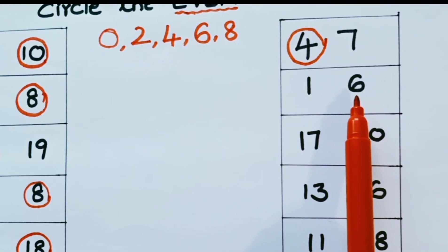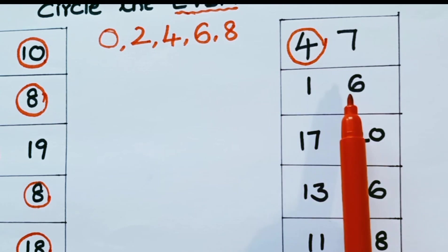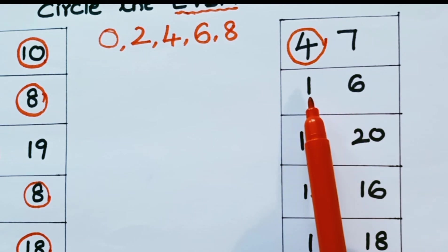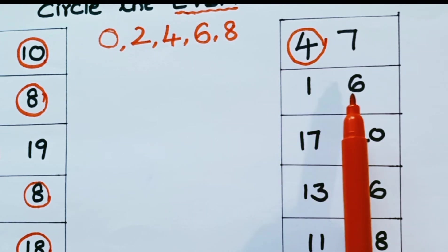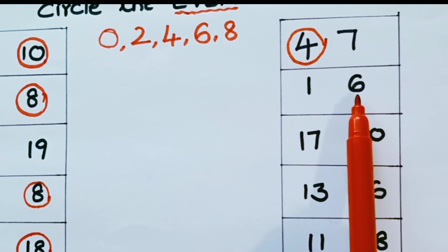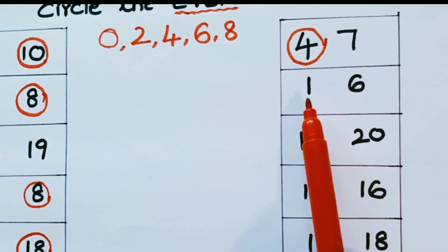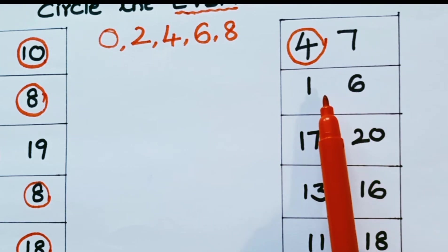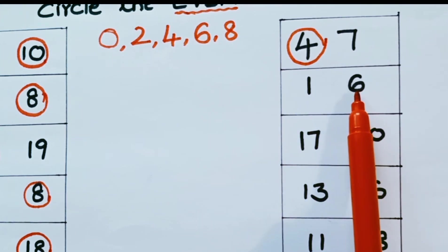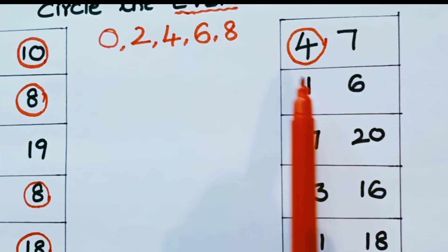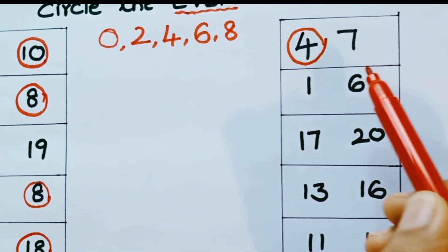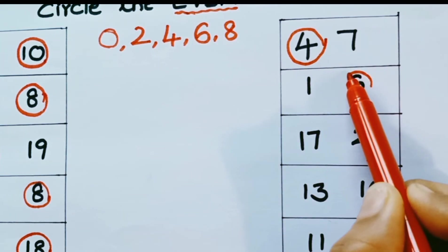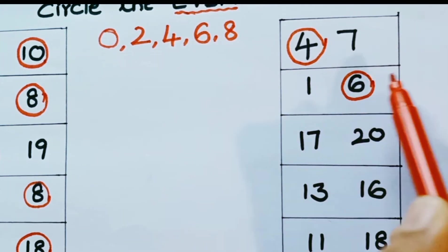Look at the numbers in the next row. The numbers are 1 and 6. What is the even number? It is 6. 6 is an even number. Now let us circle 6.